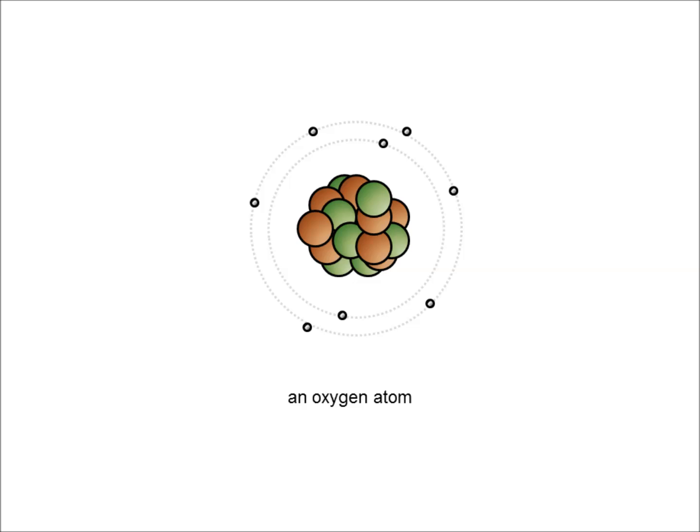So if you look at our oxygen atom, it contains a nucleus with protons and neutrons, and it's got electrons flying around that nucleus in different areas. Those areas are what are called electron shells.